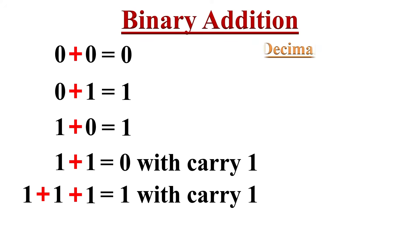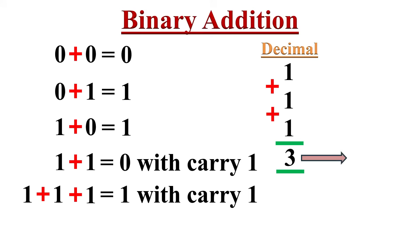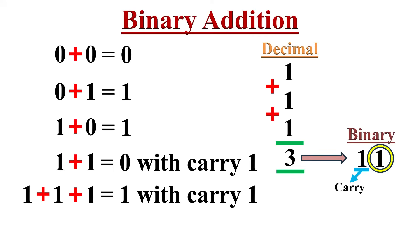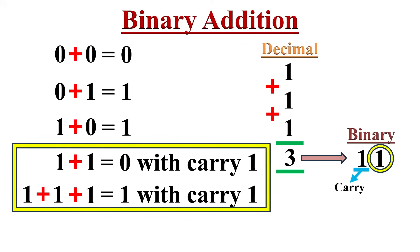In the decimal number system, 1 plus 1 plus 1 equals 3. The binary equivalent of 3 is 11. Therefore, when we are doing binary addition of 1 plus 1 plus 1, we write 1 as the answer with 1 as carry to the next column. These two rules are very critical in binary addition.